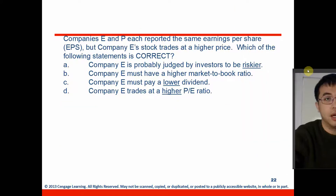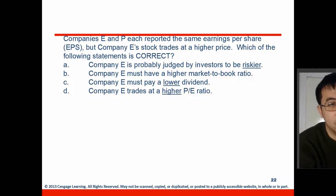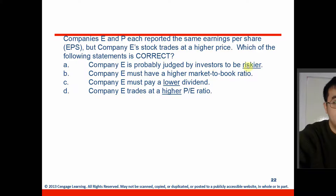Here's an exercise: two companies have the same earnings per share but one has a higher stock price. You can conclude that company has a higher P/E ratio, so the answer is D. The other options cannot be determined from the given information — risk level, market-to-book ratio, and dividend payout are not mentioned. Lower dividends is off-topic since nothing is said about how the firm pays dividends from net income, and you don't have common equity or book value data to assess the market-to-book ratio.